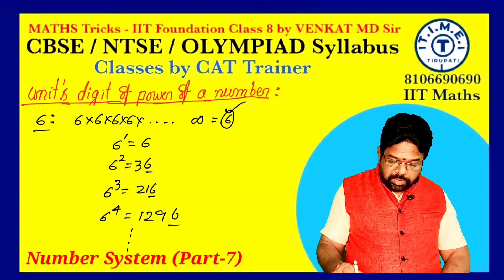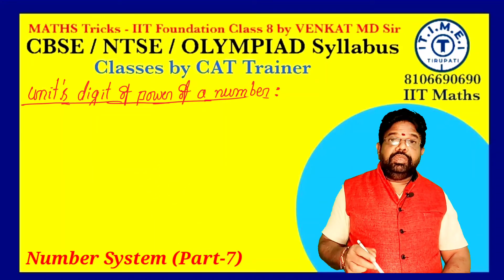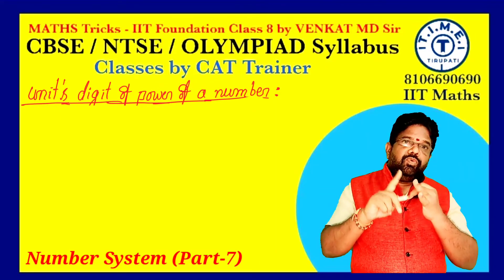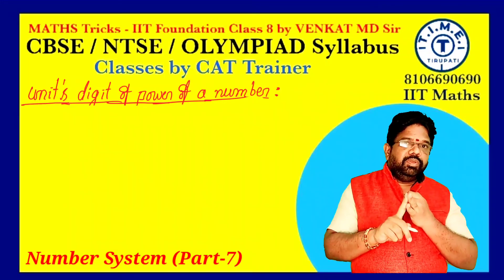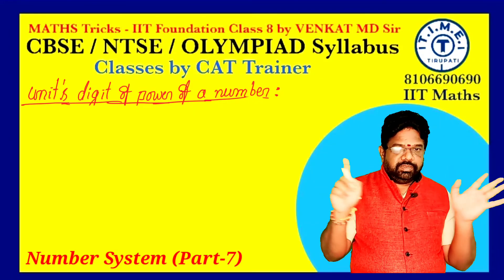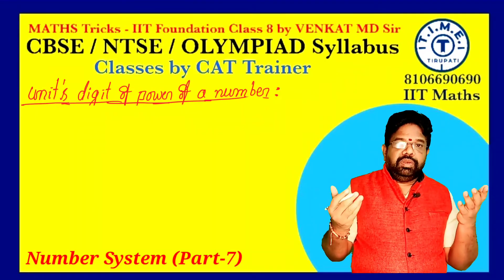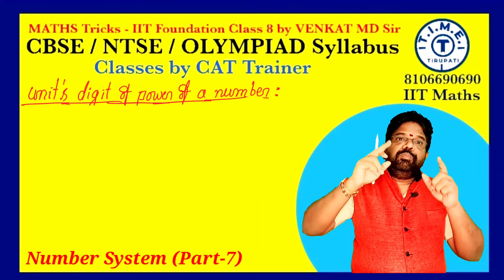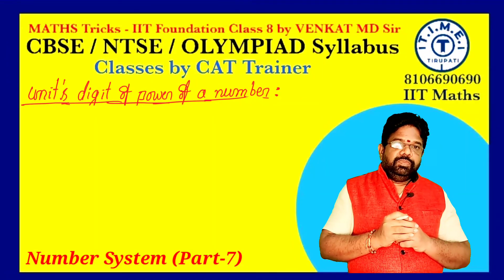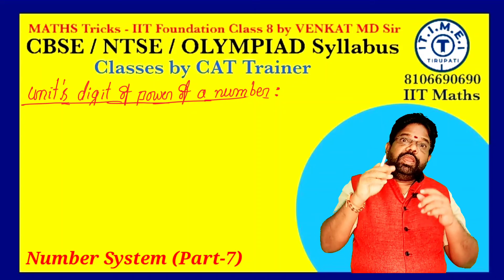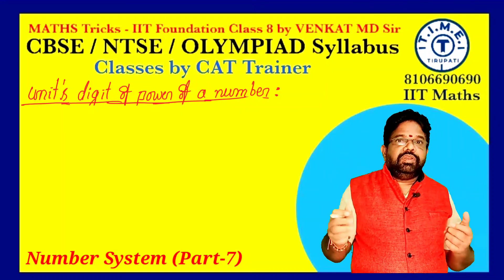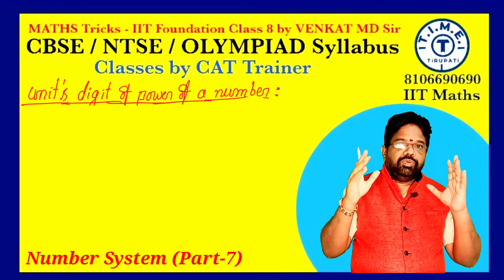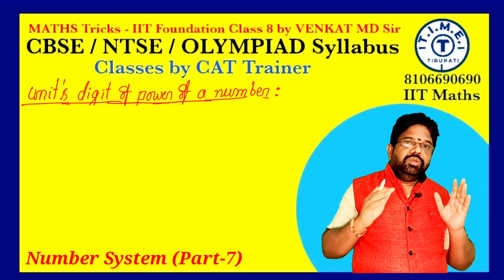To summarize: 2 power and 8 power have the same unit digits: 2, 4, 6, 8. 3 power and 7 power have the same unit digits: 1, 3, 7, 9. 4 power odd → 4; 4 power even → 6. 9 power odd → 9; 9 power even → 1. 5 raised to any power → unit digit 5. 6 raised to any power → unit digit 6. In the future class we will discuss problems related to this. Thank you.